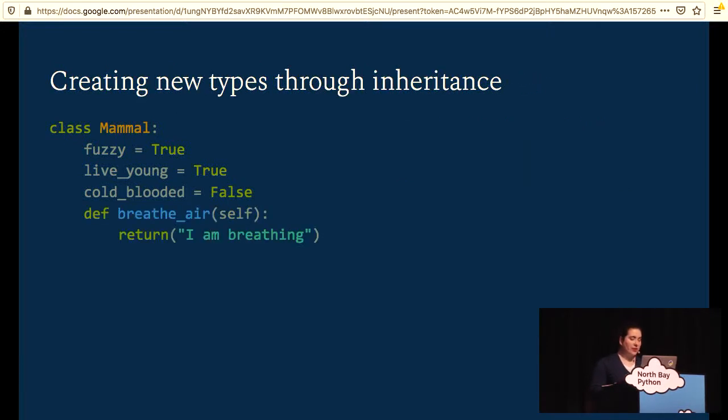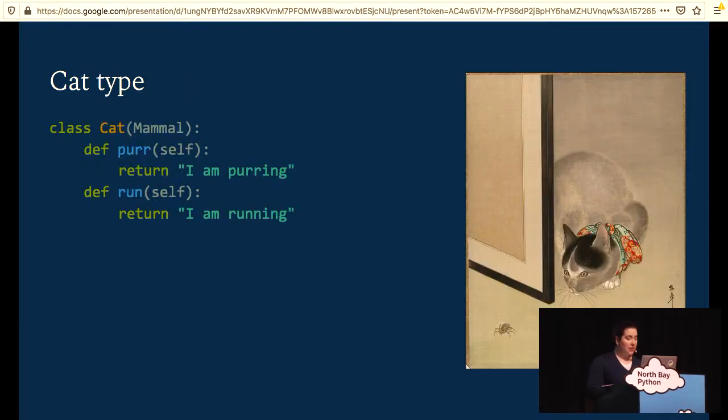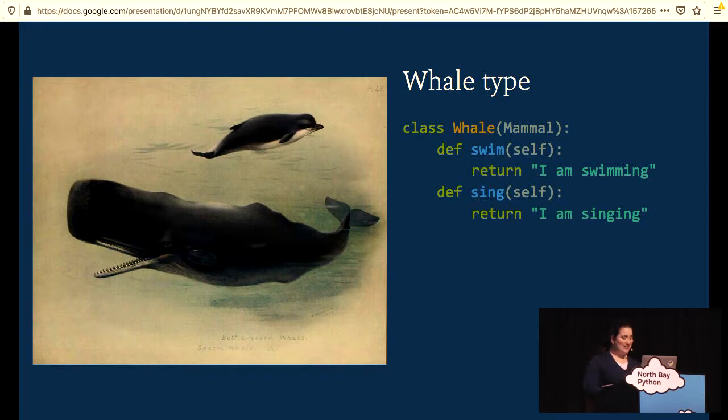It's also possible to create new types through inheritance. So here, once again, I have the mammal class, except that it has a new method on it now to allow our mammals to breathe. And this is going to be our parent class for my next couple examples. And types defined through inheritance are automatically subtypes of the parent class. Subtypes are more specific versions of their parent type. So I can take a mammal and I can make a cat. It has all the attributes of the parent class, plus purring and running methods. I can also make a whale. The whale is also a subtype of the mammal class, but it has singing and swimming methods, which are different from the methods on a cat.